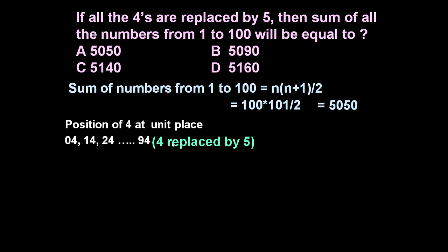Now this 4 at unit place is replaced by 5. So these numbers will become 05, 15, 25, 35 up to 95. So each and every such number is increased by one value. Means 4 become 5, 14 become 15, 24 become 25 such that 94 becomes 95.